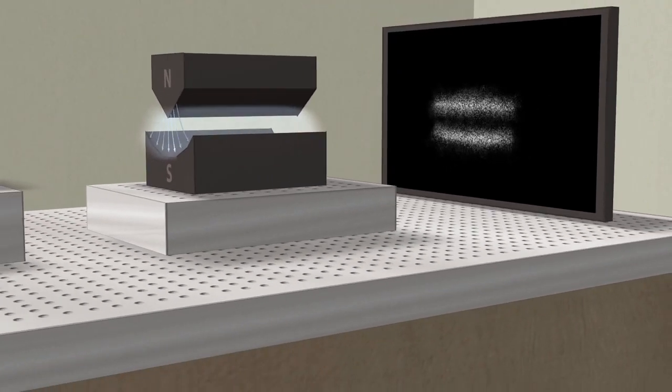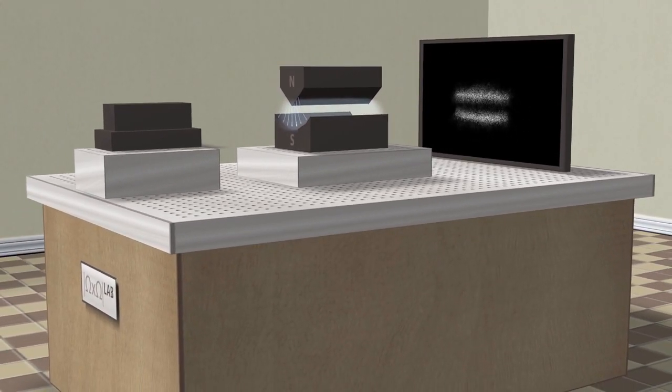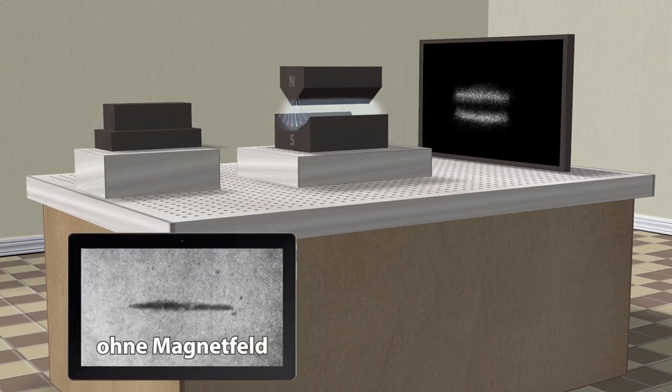When performing their canonical experiment, Stern and Gerlach were unable to use single silver atoms. Therefore, they could not demonstrate the role of chance in each experiment.